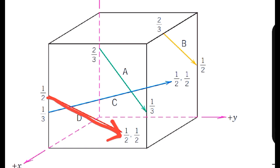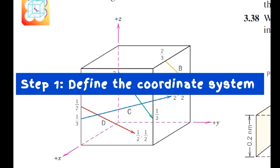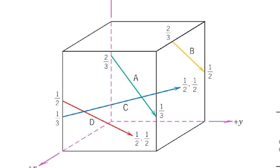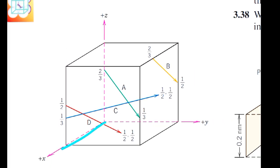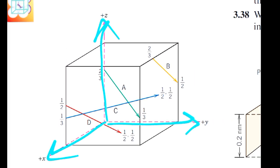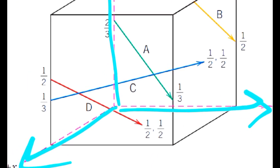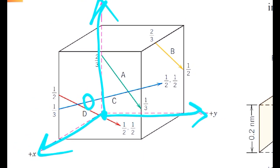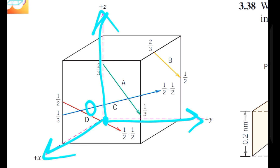Step one is to define the coordinate system. As we can see, the coordinate system is predefined here. This is the positive x-axis, this is the positive y-axis, this is the positive z-axis, and the point where all these axis lines touch each other is known as the origin. This point will be taken as the origin throughout our calculations.